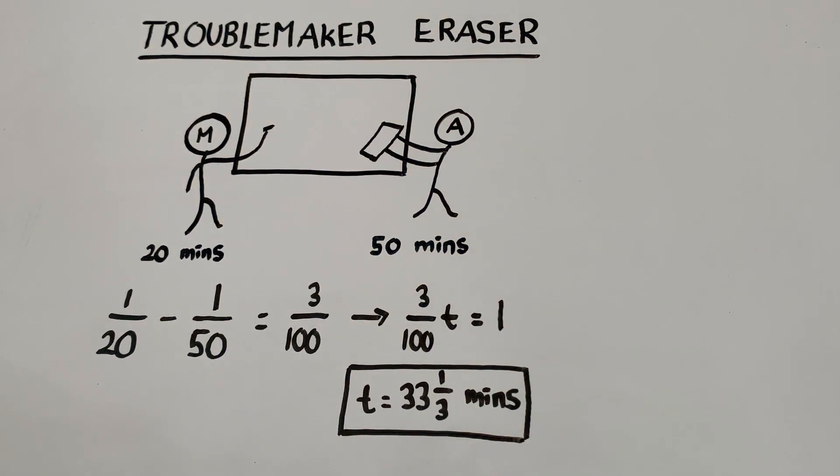And we can do a final check to make sure that this answer makes sense. So, we know that Mark can cover an entire board by himself in 20 minutes. So, when Adam is erasing, then it should take Mark longer to cover an entire board. So, we can feel pretty confident that this answer of 33 and one-third minutes is correct.